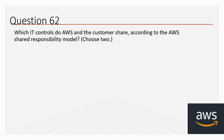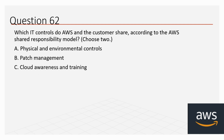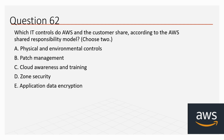Question 62: Which IT controls do AWS and the customer share according to the AWS Shared Responsibility Model? Choose two options. A: Physical and environmental controls. B: Patch management. C: Cloud awareness and training. D: Zone security. E: Application data encryption. The correct options are B and C — patch management and cloud awareness and training.